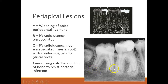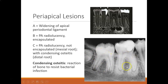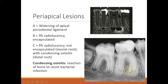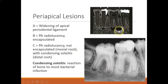The next thing that will start to happen is you start to see an encapsulation. Then you can see a radiolucency that's not encapsulated, with condensing osteitis on the distal root. Condensing osteitis is really clearly visible here. It's a reaction of the bone to resist the bacterial infection — the body starts building up, walling off, densening the bone at the apices to try to wall off the infection. You can see in this diagram how the bone is made to look more dense to wall off the infection.